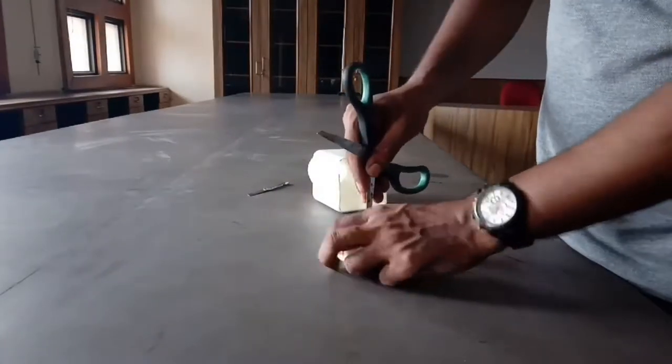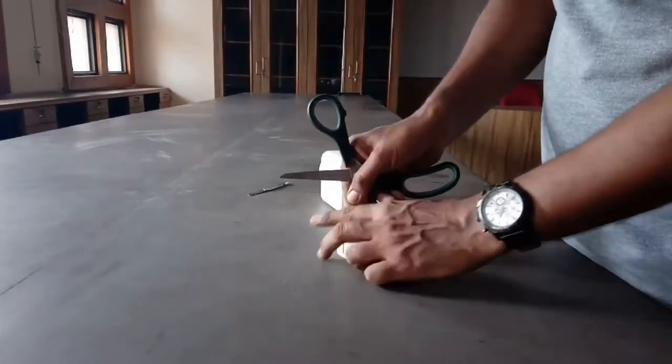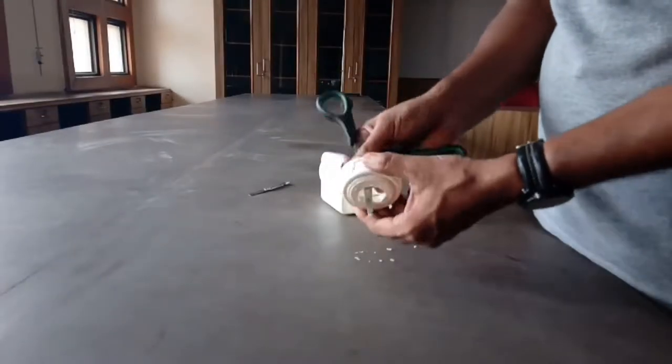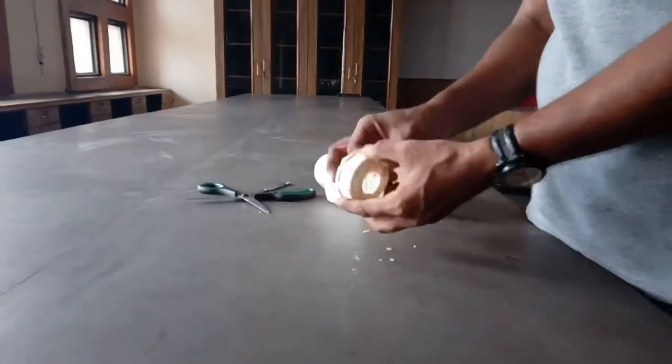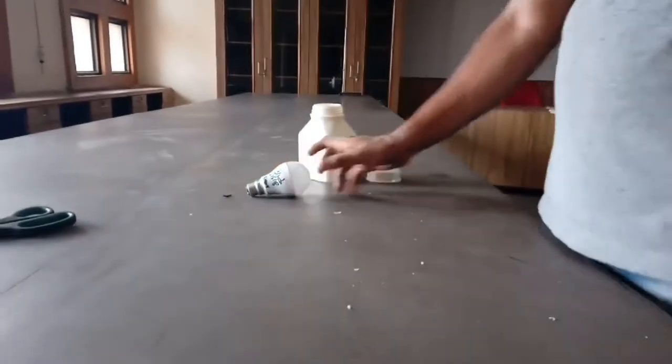Now take the cap and make a hole in it of the size of the bulb holder. Do it carefully.